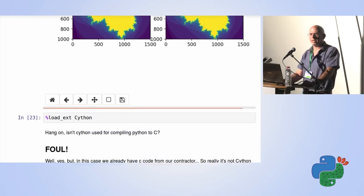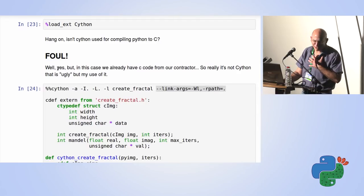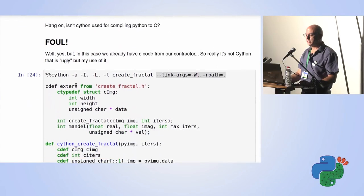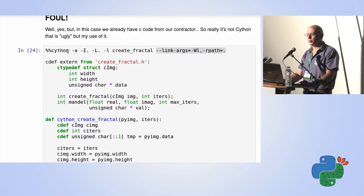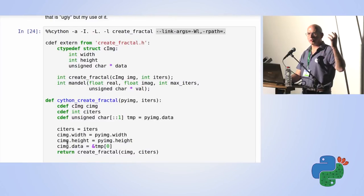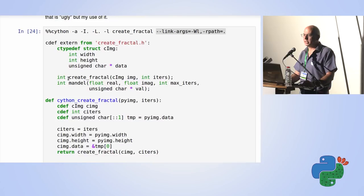As I said, Cython is usually used for compiling Python code to C. We already have C code from our contractor, so it's not really Cython that's ugly — it's my use of it. Cython in Jupyter notebook has a nice magic: once you've done load_ext Cython, you can use the %%cython magic to tell the notebook that everything below is Cython code. Cython is a mini language that looks like Python but with extensions. When compiled, it needs a compiler and produces a shared object or Python module written in C. The Jupyter notebook handles loading that into our namespace so we can call these functions just like regular Python functions.